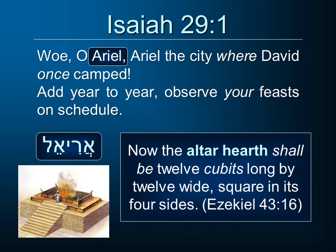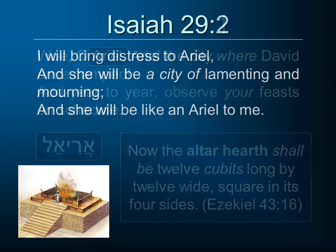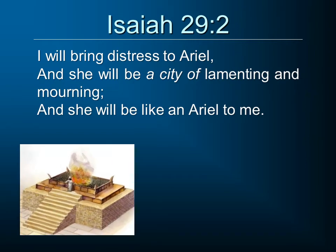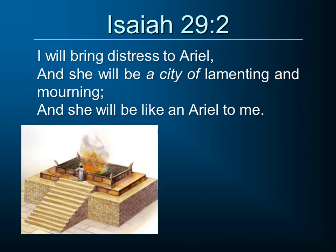'Woe, O Ariel! Ariel, the city where David once camped. Add year to year, observe your feasts on schedule.' What happened at the feast? You had sacrifices on the altar. Verse 2: 'I will bring distress to Ariel, and she will be a city of lamenting and mourning, and she will be like an Ariel to me.' She will be like an altar where there is lamenting and mourning and burning and things consumed. It's probably the latter meaning that is primarily in view — Jerusalem is going to see burning and sacrifice and great lament and mourning.